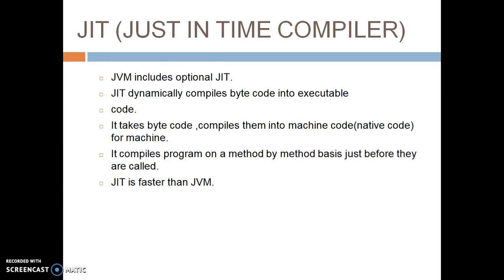JIT is a program that improves performance. JIT dynamically compiles bytecode into executable code. It takes bytecode, compiles them into machine code for the machine. It compiles the program on a method basis just before they are called. JIT is faster than JVM. JIT is a program which works on bytecode and is present inside the JVM. JIT optimizes the performance of bytecode, and it is optional because it works on the bytecode which is compulsory. There are many functions of JIT, such as data analysis and many more.